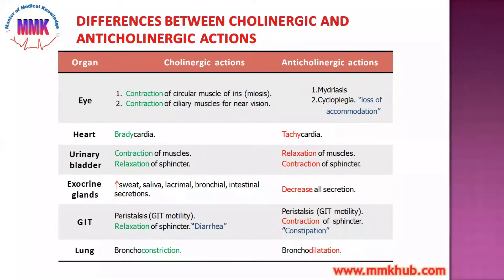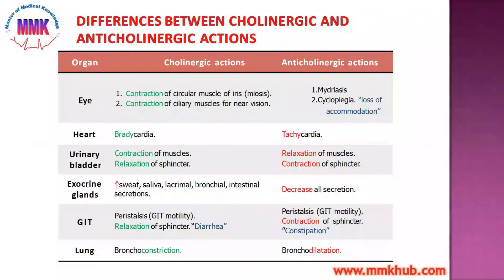Exocrine glands — sweat, saliva, lacrimal, bronchial, and intestinal secretions — all increase under cholinergic stimulation because the patient is in a relaxed state. But when we have anticholinergic drugs, all these secretions decrease.